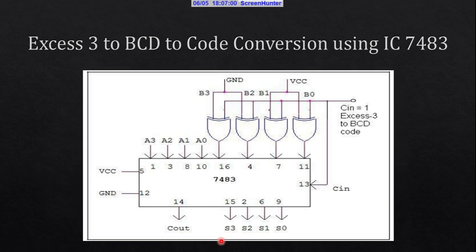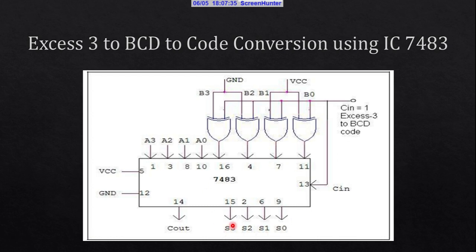To convert XS3 code back to BCD, we apply 1 at the carry input. This generates 1100, and with the carry it becomes 1101, which is the 2's complement (negative) of 3. This value is then added to the XS3 code input, and we obtain the BCD code at the output.